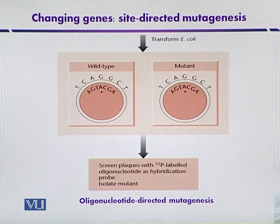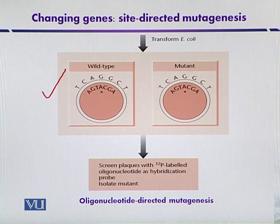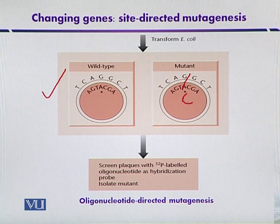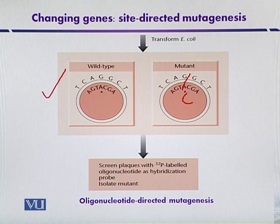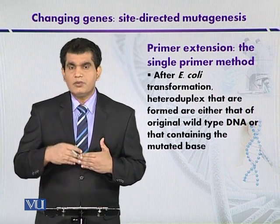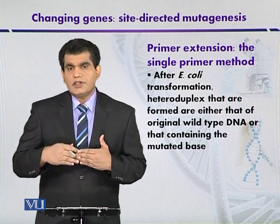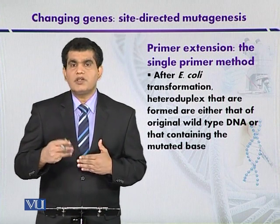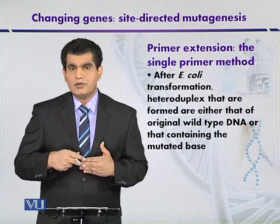After transformation, one possibility is that most progeny cells will restore the wild-type phenotype because of the host repair machinery. But in some cases, in place of adenine, cytosine is introduced — guanine introduces the mismatch resulting in cytosine. After transformation of host organisms like E. coli, the progeny cells divide and two types of heteroduplex may be produced.